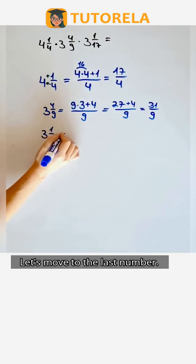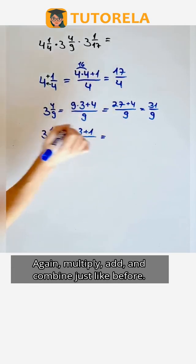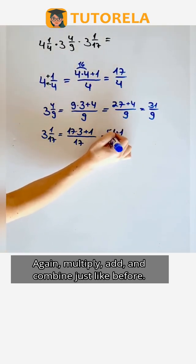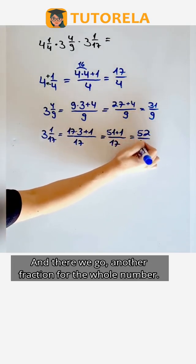Let's move to the last number. Again, multiply, add, and combine just like before. And there we go, another fraction for the whole number.